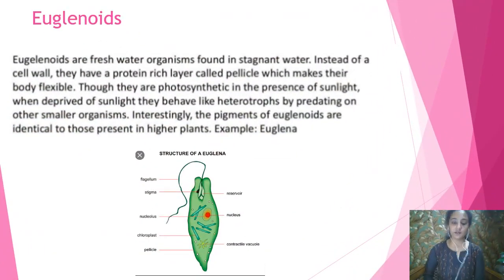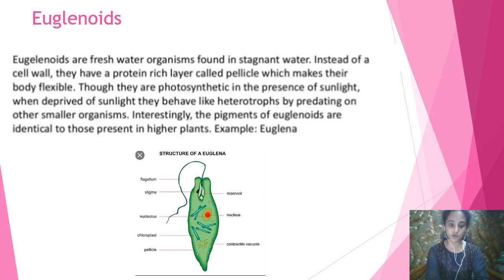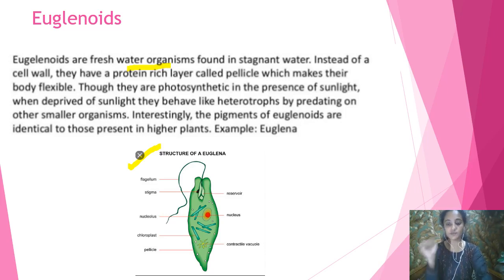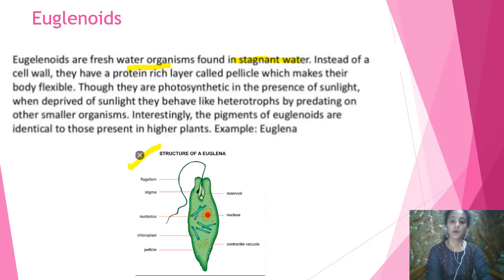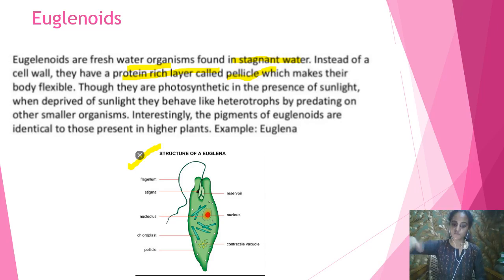The next group is euglenoids. You may have studied euglena in Class 8 or 9. Euglenoids are normally found in fresh, stagnant water — water that does not move. Instead of a cell wall, they have a proteinaceous covering called a pellicle, which makes their body flexible. Unlike diatoms, which are rigid, euglenoids are flexible because of this pellicle.